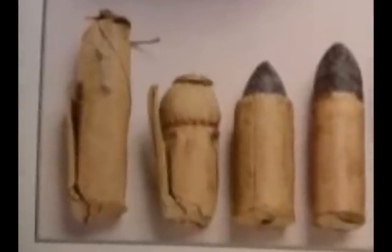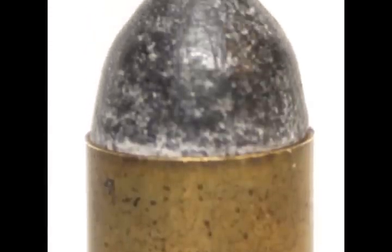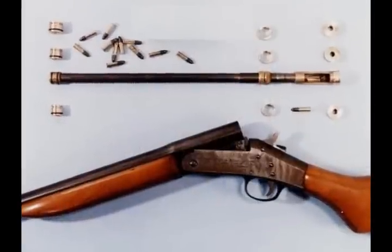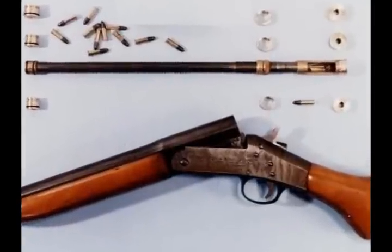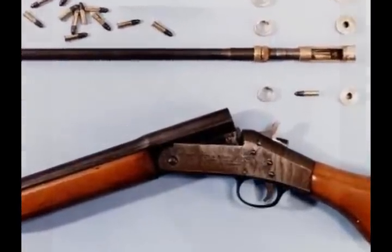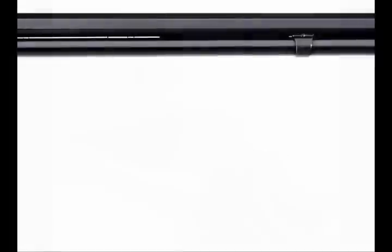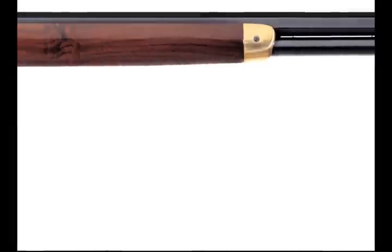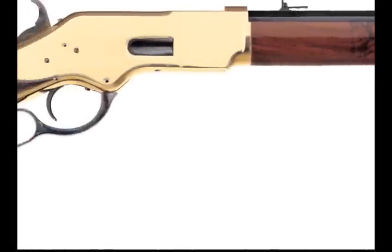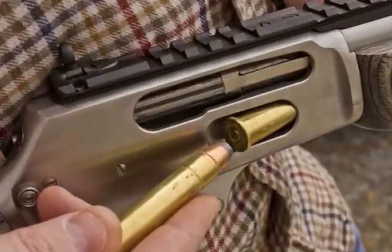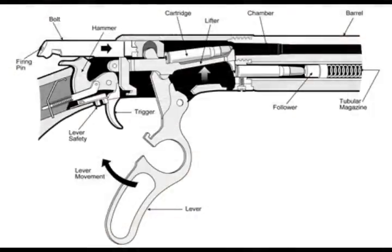Lastly, the cartridge was invented, drastically cutting back the time it took to load and shoot. Further advancements would be in the gun itself. The breech-loaded rifle allowed cartridges to be loaded in the breech, and then later the lever-action gun, where cartridges would be loaded in the lower barrel and when the lever was used, a new bullet would be chambered.